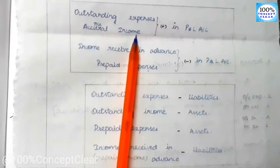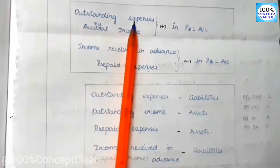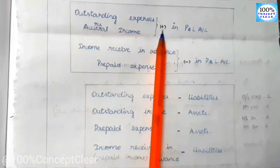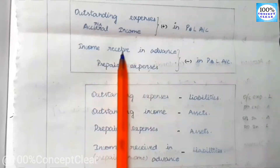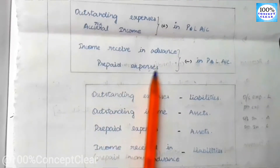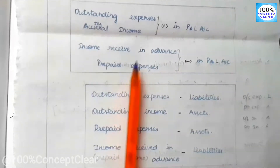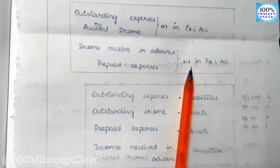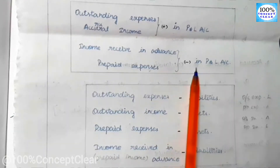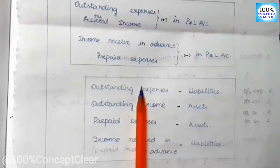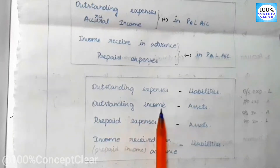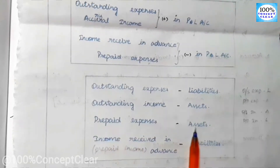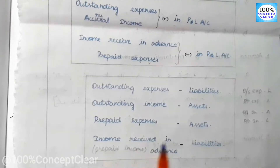Outstanding expenses and accrued income — the outstanding items: for expenses, we add them; for income, we add them to the P&L account. Income received in advance is prepaid income. Prepaid expenses — the prepaid amount, we minus from the same account. On the balance sheet: outstanding expenses is a liability, outstanding income is an asset, prepaid expenses is an asset, and prepaid income (income received in advance) is a liability.